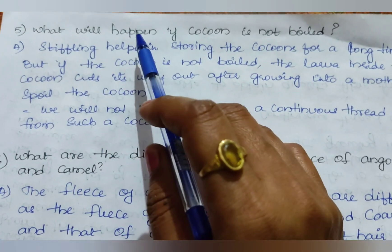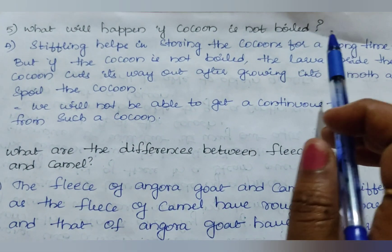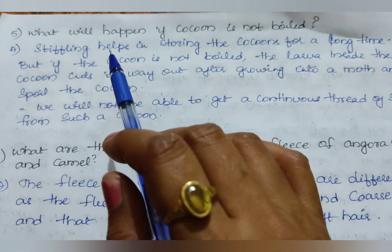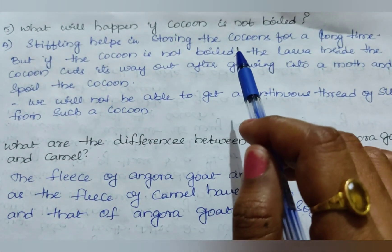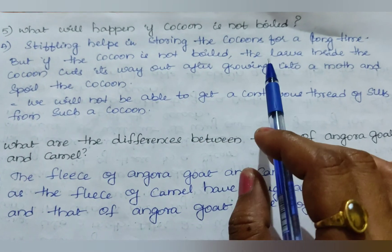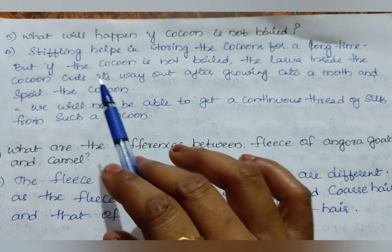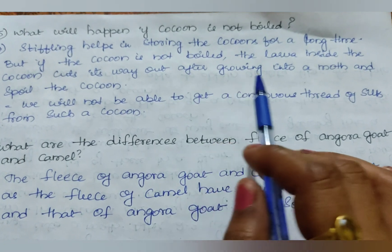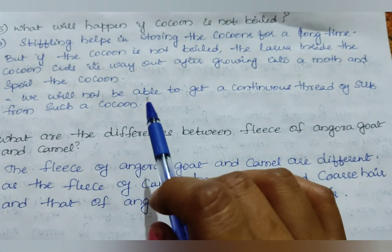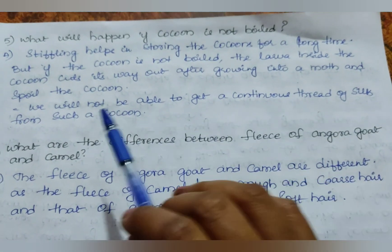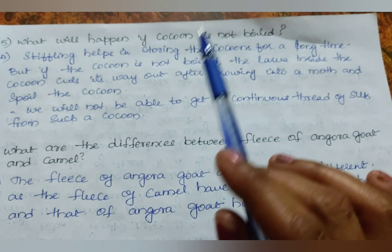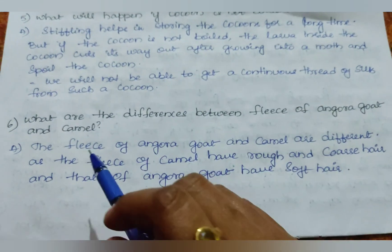Fifth question: What will happen if the cocoon is not boiled? Boiling is nothing but stifling. Stifling helps in storing the cocoons for a long time. But if the cocoon is not boiled, the larva inside the cocoon cuts its way out after growing into a moth and spoils the cocoon. We will not be able to get a continuous thread of silk from such a cocoon. Hence cocoons have to be boiled.